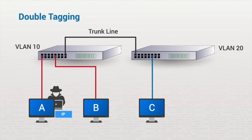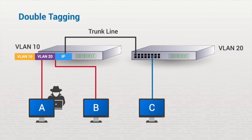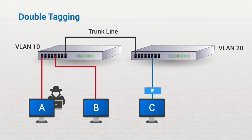Double tagging is accomplished by manipulating the frame being sent to include two VLAN tags — one for VLAN 10 and one for switch 2 or VLAN 20. When this type of frame is received by VLAN 10's switch, the first VLAN tag is removed. But seeing that the second VLAN tag is referencing VLAN 20, the frame is forwarded to that switch. Then, as it normally would, this switch strips off the second VLAN tag and sends the frame to the victim's VLAN, successfully hopping from one VLAN to another.